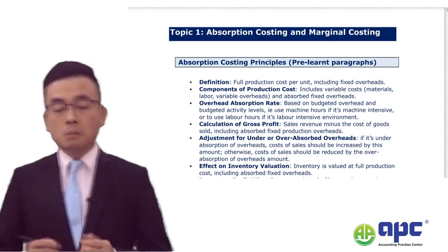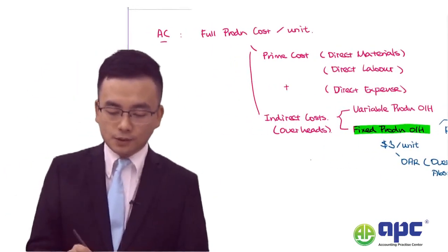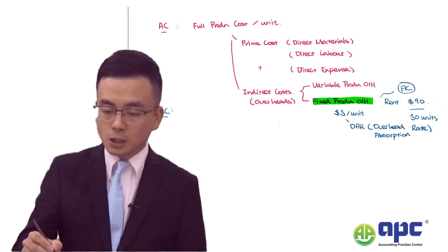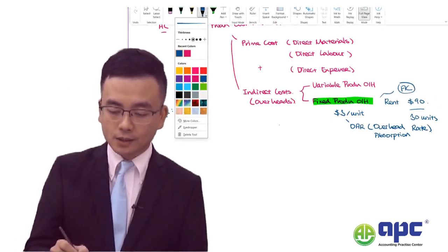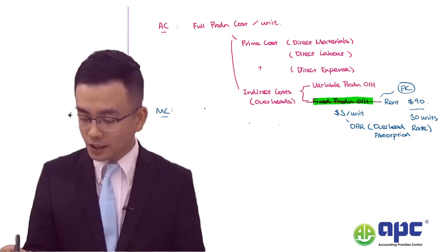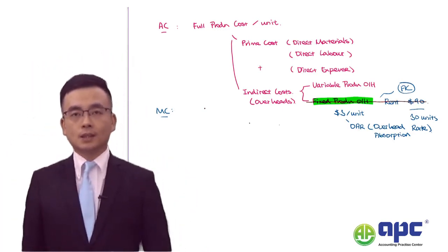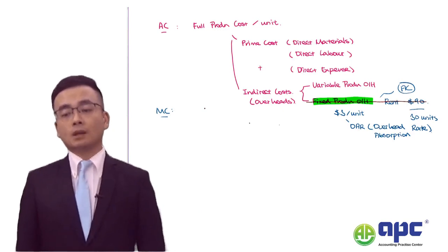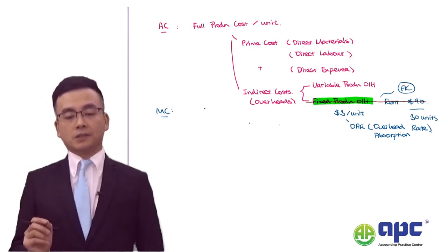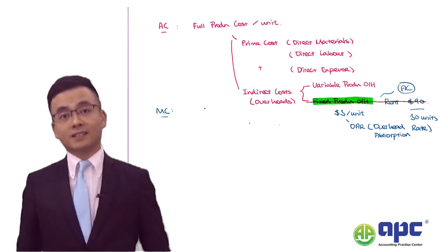How about marginal costing, on the other hand? With marginal costing, we are not particularly interested in the fixed production overhead issues in the short term — we completely ignore that in the short term. Of course, we would still like to charge the fixed production overheads as a period expense in marginal costing when computing the net profit in the end.